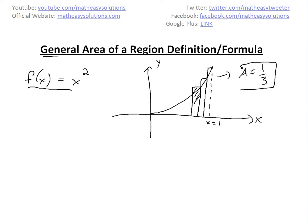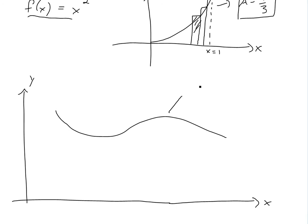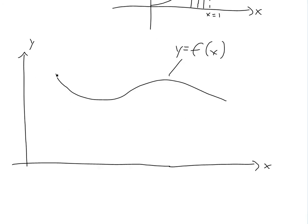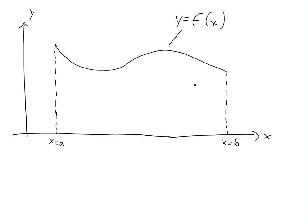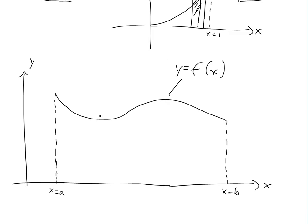Now we're going to use the same idea, but now for a general region instead of this exact x squared region. If you have this general function y equals f(x), and now we want to know what the area is under the graph from x equals a on this side to x equals b on this side — that's the area under this graph here.